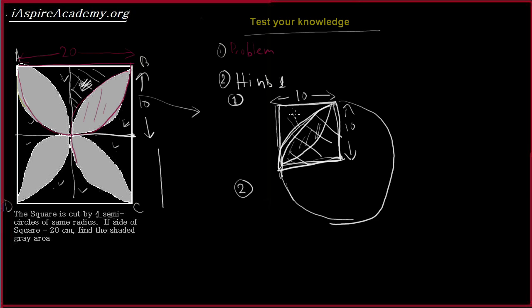So the area of this part, let me do a different color. So area of this part would be area of square, which is 10 square minus pi r squared by 4, that is 10 square pi by 4, equal to 100 minus 25 pi. Which is the area of this.